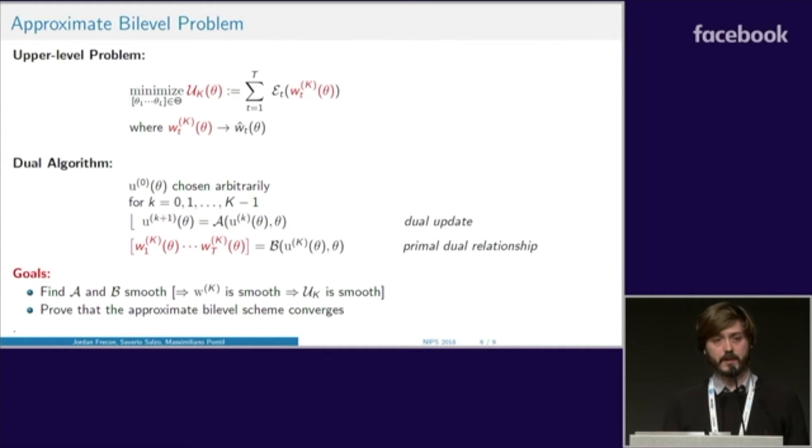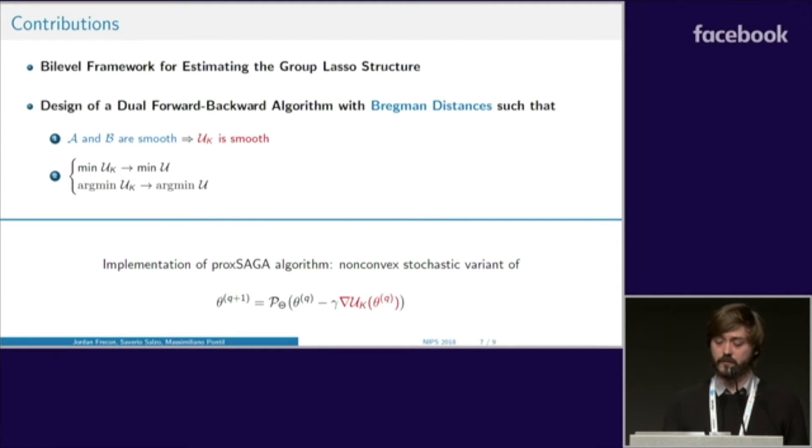The goals are twofold. We would like to find mappings A and B that are smooth to smooth the upper-level objective U K. Also, we'd like to prove that this approximate bi-level scheme converges to the exact one.